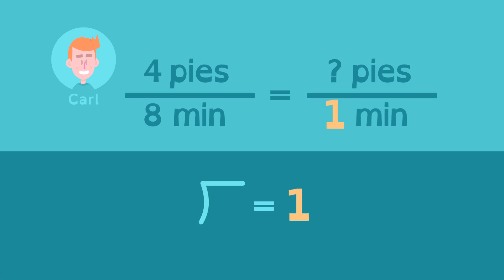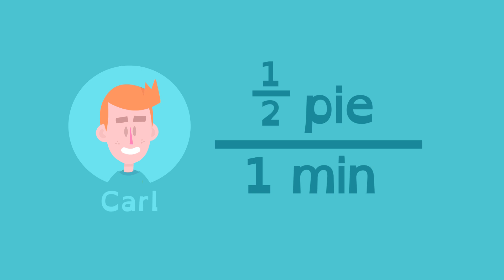Since a unit equals one, we know we need to divide eight into eight to get one. To keep the fractions equivalent, we must also divide four by eight. Now we can see Carl's rate per minute. Carl's unit rate is half a pie per minute.